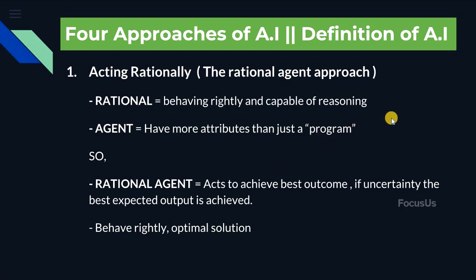Other attributes include perceiving their environment, adapting to change, and being able to reach a goal, and so on. We'll learn more about agents in the fourth video. For now, we just need to know that a rational agent is one that acts to achieve the best outcome. If there is any uncertainty, then the best expected output is achieved and our machine should behave rightly and keep the optimal solution.